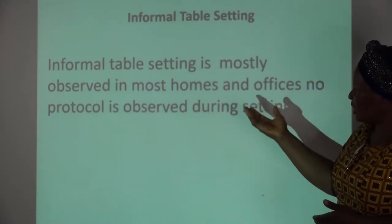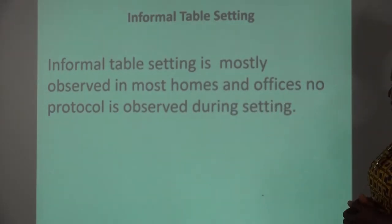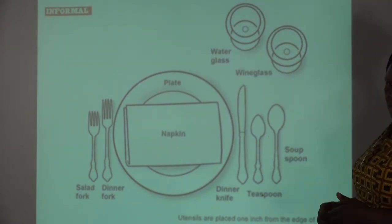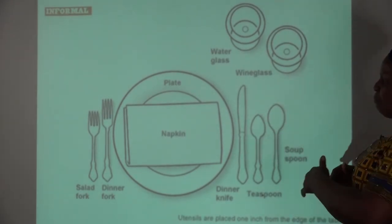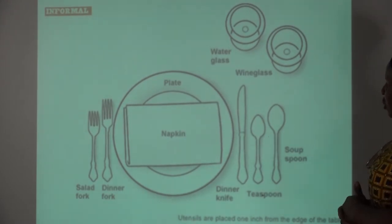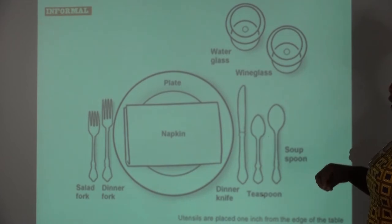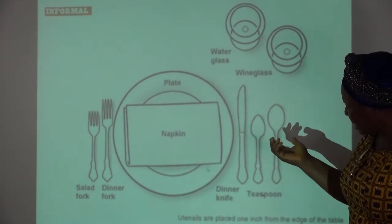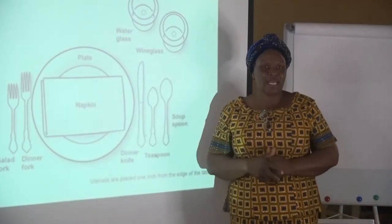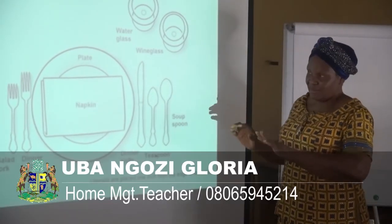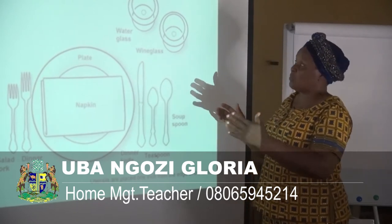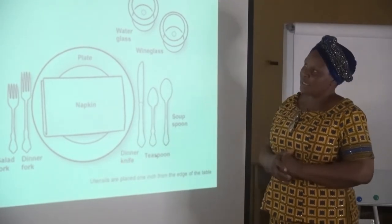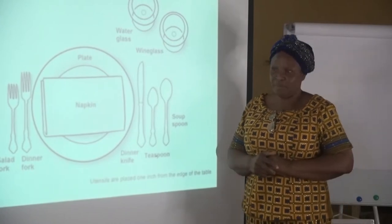Informal table setting is mostly observed in most homes and offices. No protocol is observed during serving. From the previous diagram, there are many cutleries arranged for a standard hotel, but here only the major eating implements are needed: your water glass, wine glass, plate, and napkin. There are just very few, not like a standard hotel or restaurant. Just the spoon and the cup, and that is an example of an informal table setting.